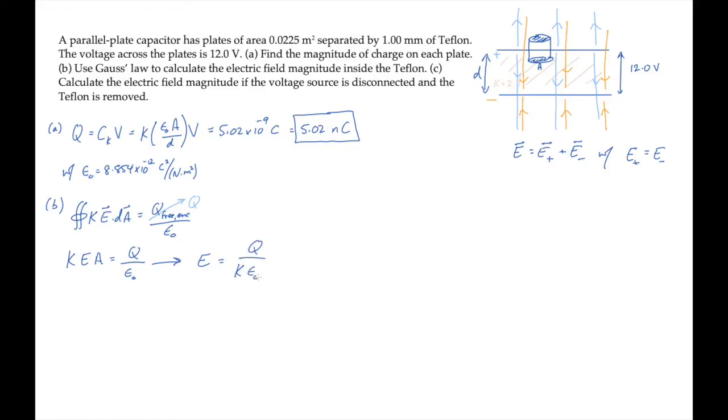Solve this for the electric field E, and substitute the known charge, the dielectric constant, epsilon naught, and the plate area, to find the electric field magnitude is 12,000 volts per meter.